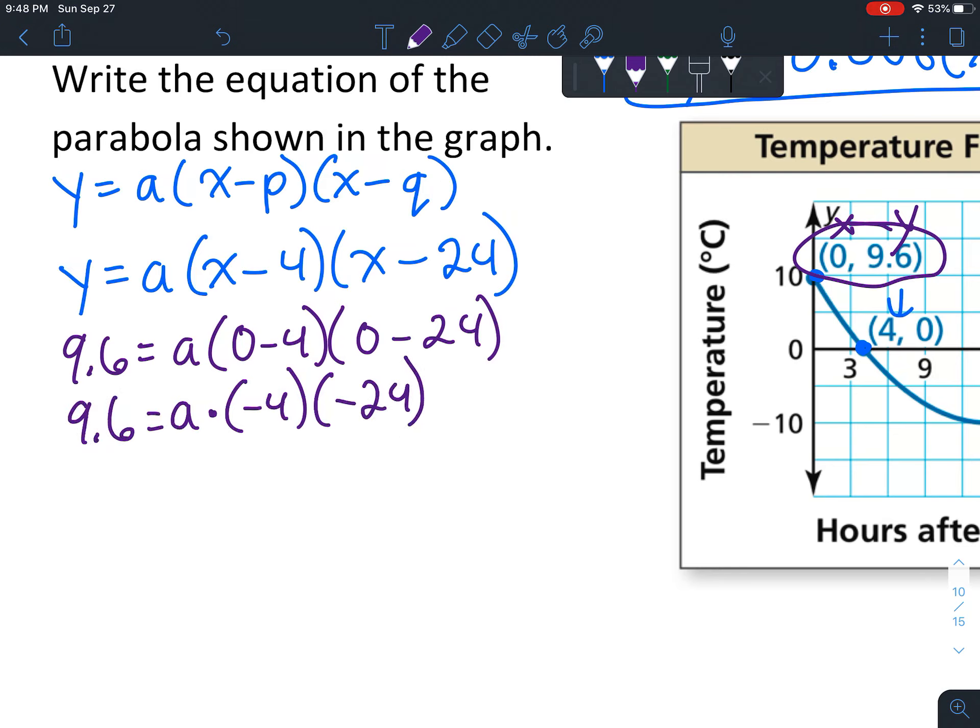9.6 equals negative 4 times negative 24, which equals positive 96. I usually write my a on the other side, so 96a = 9.6. When you divide that, you end up with 0.1 = a.